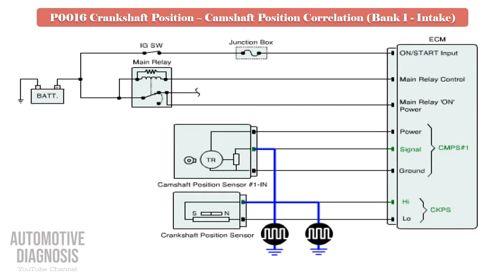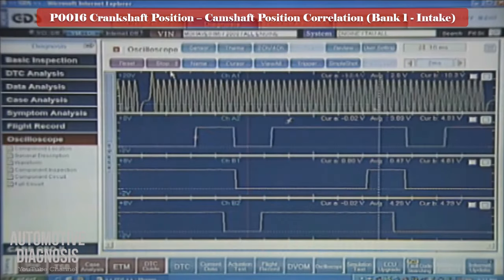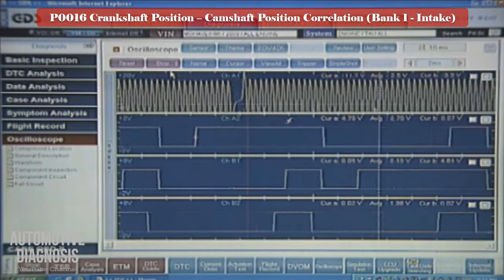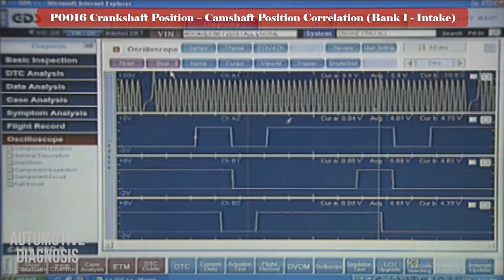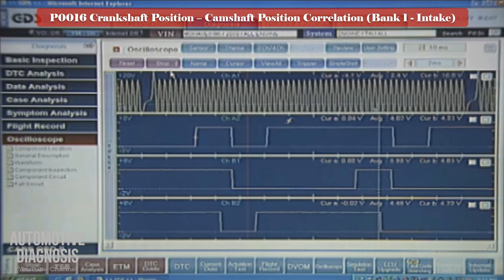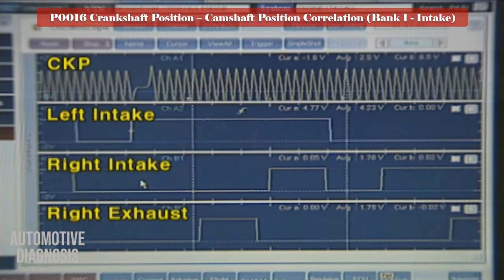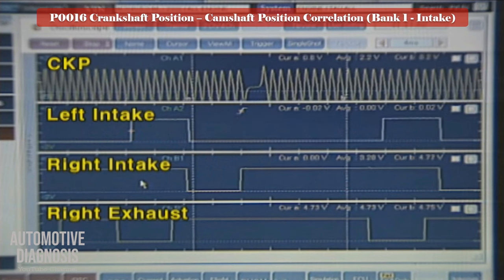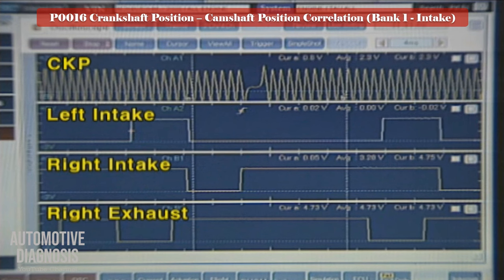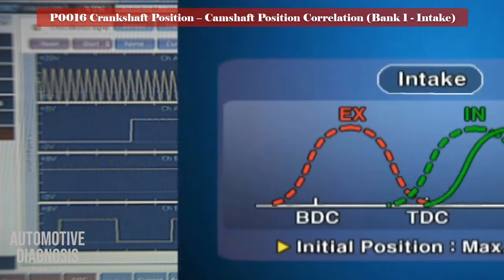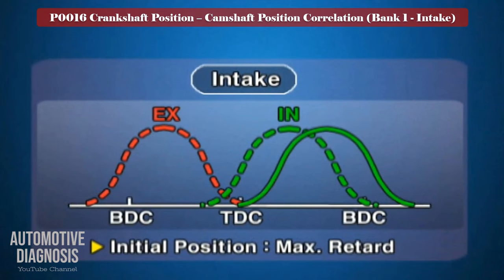Before removing the VVT, you can check the engine timing by an oscilloscope. Check the crankshaft and camshaft position sensor waveform and compare it with the specification in the workshop manual. This waveform shows a typical crankshaft and camshaft sensor waveform at idle. If the 17th signal of the crankshaft sensor after the missing tooth is aligned with the high signal of the camshaft sensor at idle, PCM recognizes that synchronization between CKP and CMP is completed. Otherwise, it will set P0016 fault code for timing correlation.